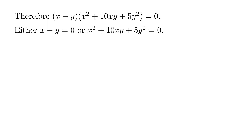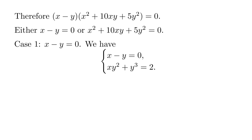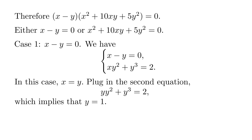This is the key step. Case 1: x − y = 0. Combined with one of the original equations, xy² + y³ = 2. From the first equation, x = y. Plugging into the second equation, y·y² + y³ = 2, so 2y³ = 2, which means y = 1. Therefore, both x and y equal 1.